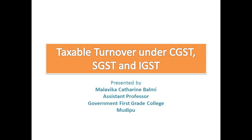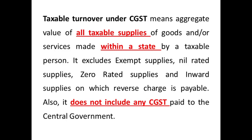For aggregate turnover, all supplies are included. There are supplies taxable under CGST, SGST or taxable under IGST. Taxable turnover under CGST means aggregate value of all taxable supplies of goods and/or services made within a state by a taxable person. It excludes exempt supplies, nil rated supplies, zero rated supplies and inward supplies on which reverse charge is payable. Also, it does not include any CGST paid to the central government.